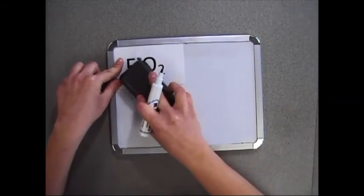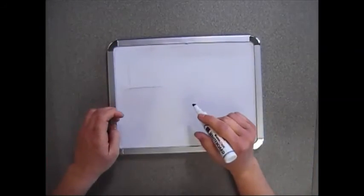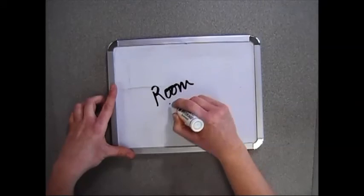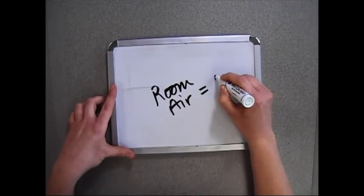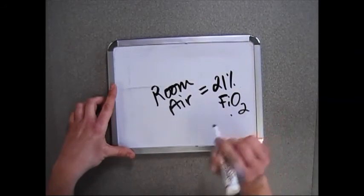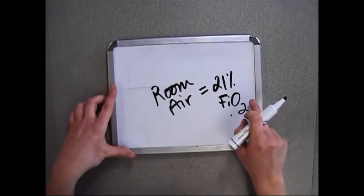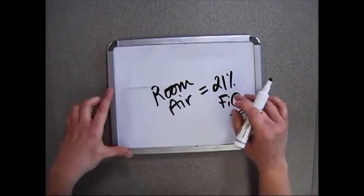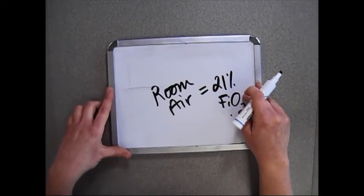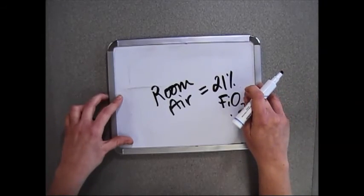When you consider the concentration of room air itself, what is the FiO2 of that? So room air, the FiO2 is 21%. And so this will be talked about more in detail later on in upcoming videos and how this number can be added or how we can add to this number specifically when adding liters of oxygen.